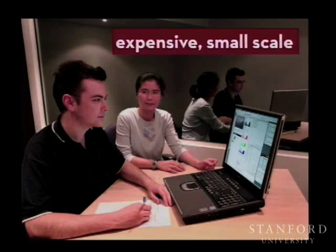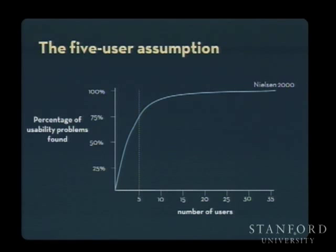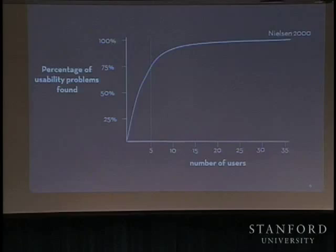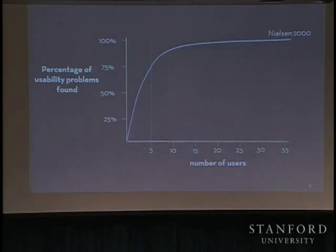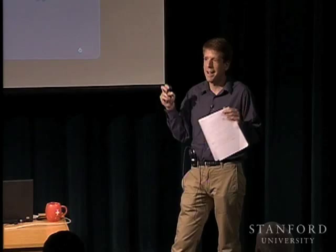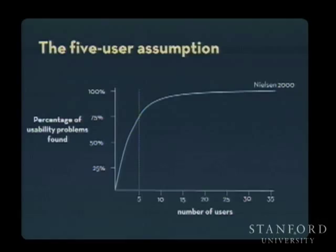Maybe that's not a problem, because researchers like Jacob Nielsen publish charts showing what they call the 'law of diminishing returns.' The x-axis shows the number of users in a usability test and the y-axis shows the percentage of usability problems found. There's a dramatic rise in problems found with just the first five participants — a 'rule of five' that says you can find 75 percent of usability problems with just five participants.